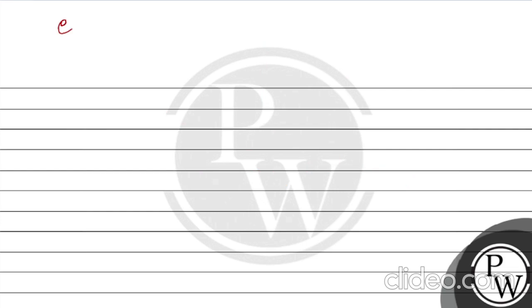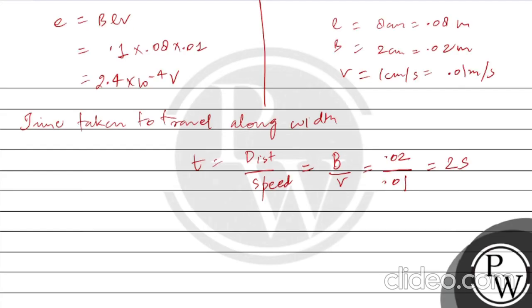Now we calculate the EMF for the case of moving along the breadth. Note that capital B is the magnetic field, so to avoid confusion we represent the width of the loop with small b. Let's rewrite the formula using small b for width.